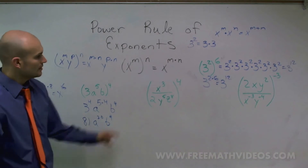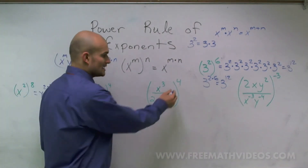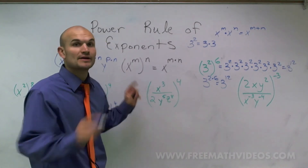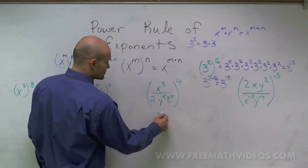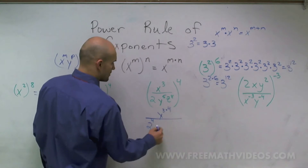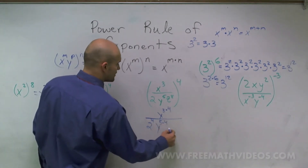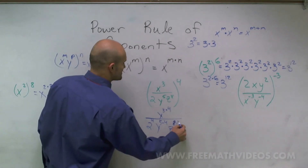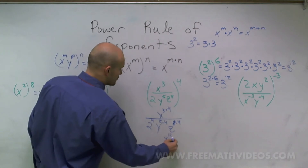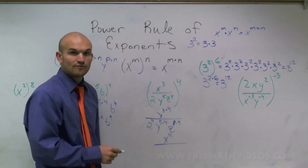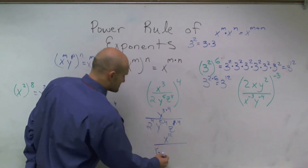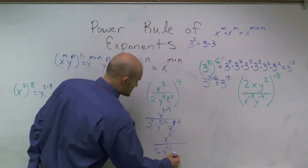Next, remember our distributive property — we've got to distribute this exponent to all of my terms, whether it's in the numerator or the denominator. So I have x to the 3 times 4, 2 to the 4th power, y to the 5 times 4, and z to the 8 times 4. When I reduce this, I get x to the 12th, over 2 to the 4th which is 16, y to the 20th, and z to the 32nd.